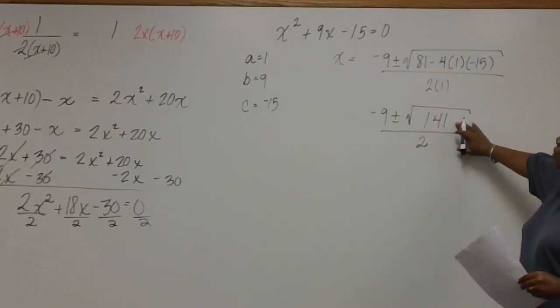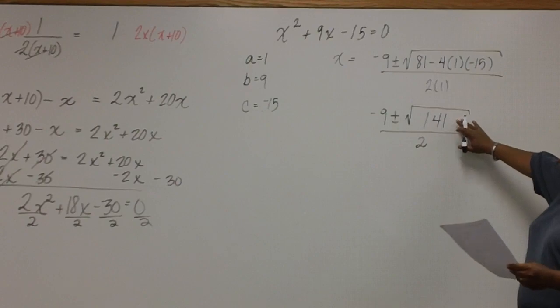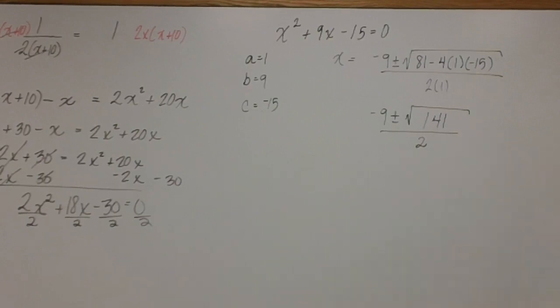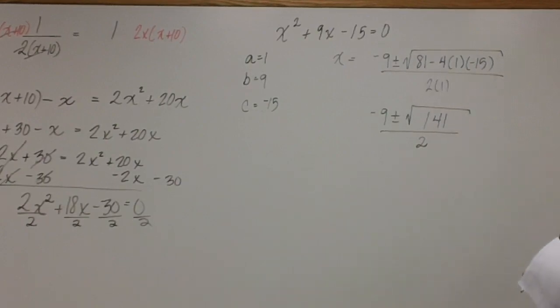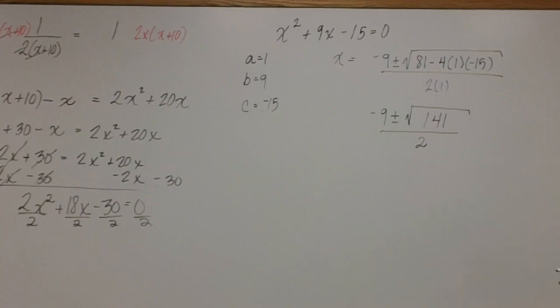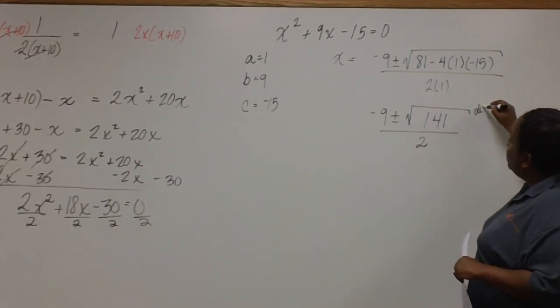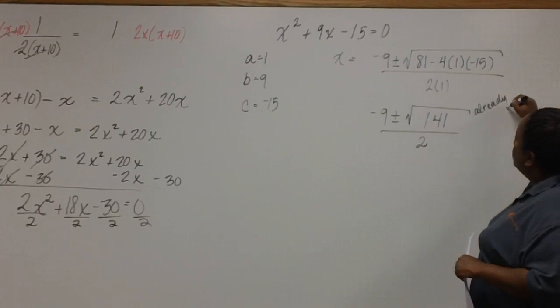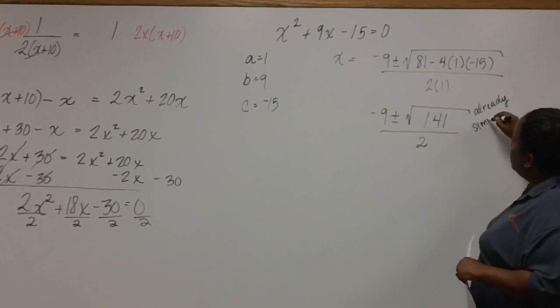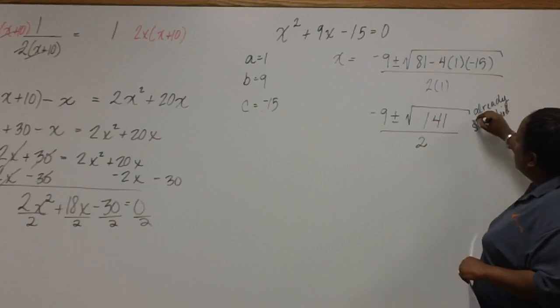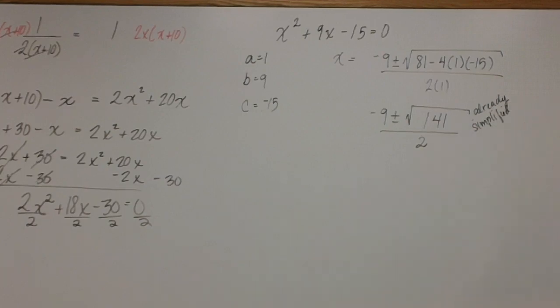So the first thing you want to do is check to see if 141 is a perfect square. You'll find that it's not. So the next step would be to do the prime factorization of 141. But when you do the prime factorization of 141, you'll find that it can't be simplified. So we'll leave it under the radical since it's already in its simplified form.